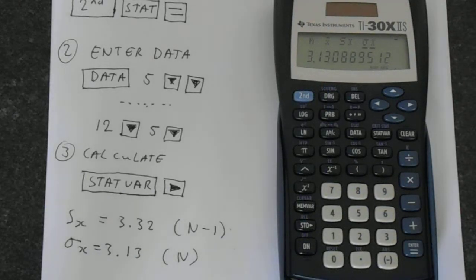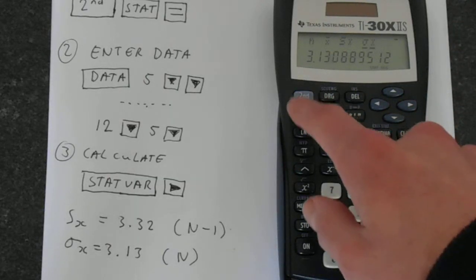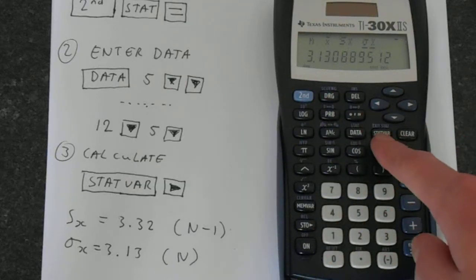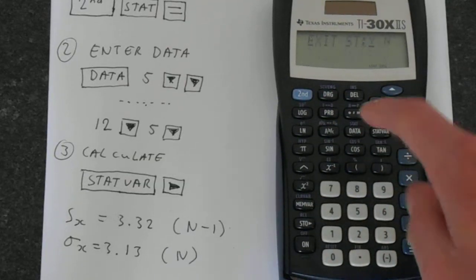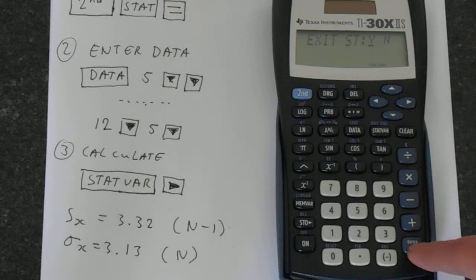So that's how you do standard deviation. As one final point, you probably don't want to be stuck in this mode forever. If you press second function and then stat var, you've got exit stat, and then enter for yes—that gets you out of stat mode.